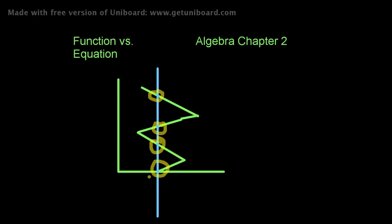Something very important to consider here is that equation does not mean function. A lot of students tend to think that when I say function, I mean this graph has an equation — and that's not the same thing. Oftentimes, functions are defined by an equation, but you can have a very legitimate, mathematically correct graph of an equation that does not fit the definition of a one-to-one function. In algebra chapter 2, they're teaching you to make that distinction — to be able to tell: this is a graph with an equation, but it's not a function, and this one over here is a function. The vertical line test is a great tool to use, but make sure you are able to make that distinction.